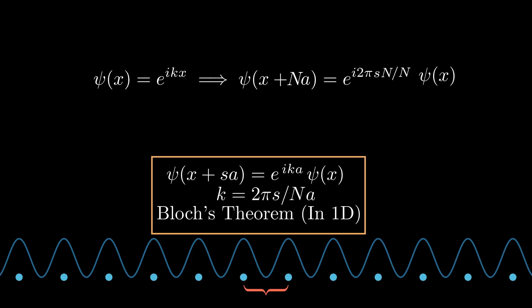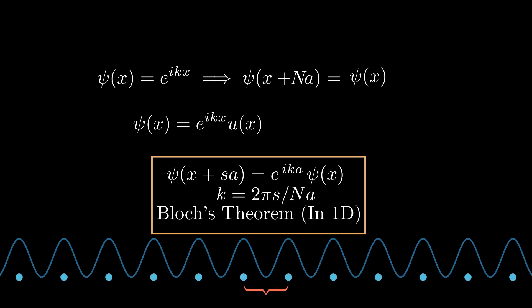The true answer is close, it's e to the i k x, but times some new function u of x, where u of x has the periodicity of the lattice. That is, u of x plus a equals u of x. You can think of this as something like a unit cell function. In fact, the sinusoid I've drawn below is representative of one of these unit cell functions.